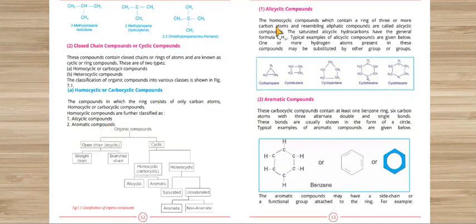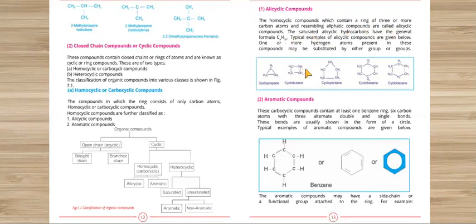Homocyclic or carbocyclic compounds are further divided into alicyclic and aromatic compounds. Alicyclic compounds are those which have a ring of 3 or more carbon atoms. The general formula for saturated alicyclic hydrocarbons is CnH2n. Examples include cyclopropane (3-membered ring), cyclobutane (4-membered), and cyclopentane (5-membered). Other atoms can replace hydrogen in the ring and it will still be alicyclic.